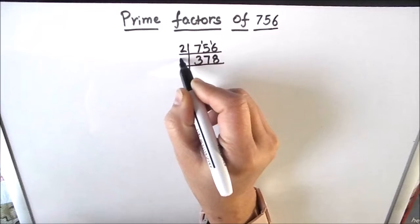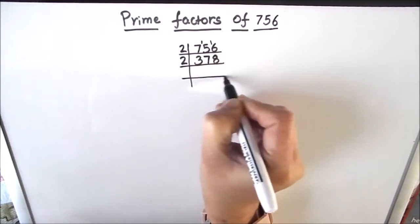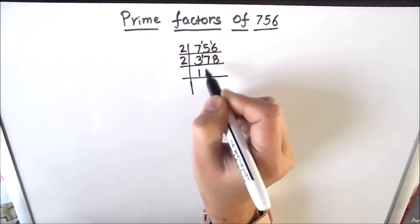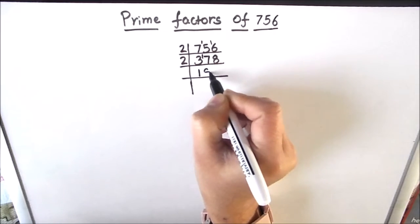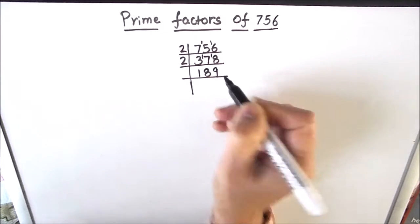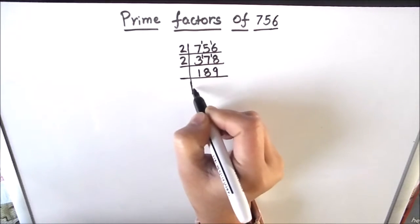2 times 8 is 16, 1 is remainder, this becomes 18. 2 times 9 is 18. Now 189 is an odd number, let's divide it by number 3. 3 times 6 is 18 and 3 times 3 is 9.